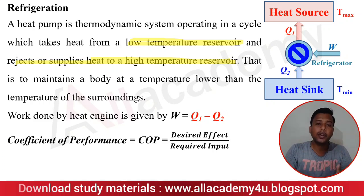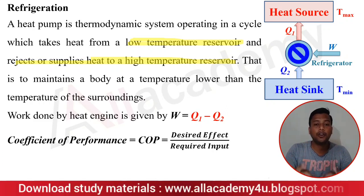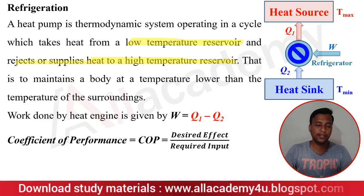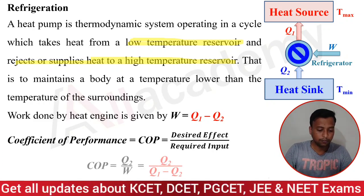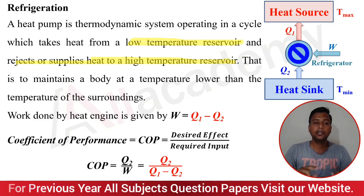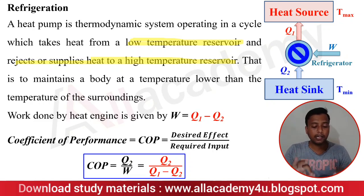Please note that many students make a mistake: if the examiner asks for the efficiency of a heat pump or refrigerator, there is no efficiency for these devices. For heat pumps and refrigerators, performance is expressed as the Coefficient of Performance. Efficiency is only defined for heat engines. The COP of a refrigerator is COP_R = Q2 / (Q1 − Q2), whereas for a heat pump it is COP_HP = Q1 / (Q1 − Q2). This small difference is important to remember.